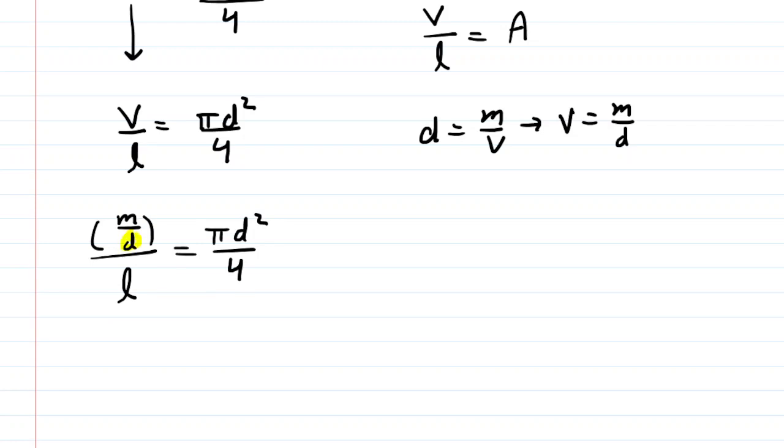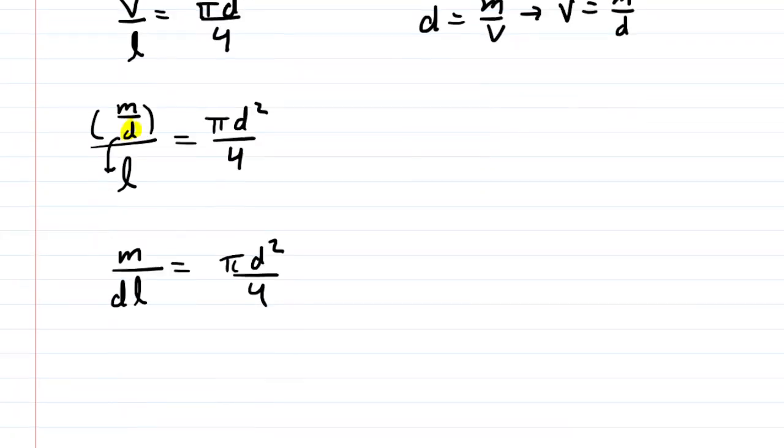We have a complex fraction on the left-hand side. That density can be shuffled to the denominator. So we have mass over density times length. And then we need to solve this for the diameter before we can begin plugging in. So you would multiply both sides of the equation by four. So you can cancel those fours out on the right-hand side. Then divide both sides by pi. On the left side, that pi ends up in the denominator because you're dividing. And then to solve for D, you would take the square root of both sides. So there is the expression we need for the diameter. We can now go ahead and plug in.